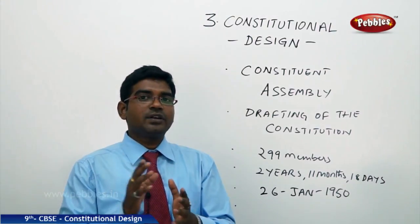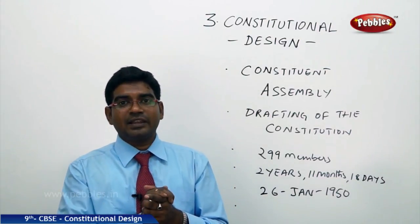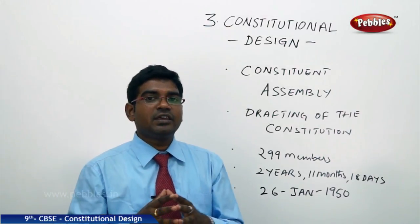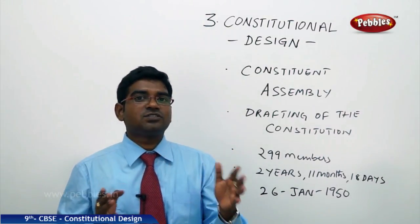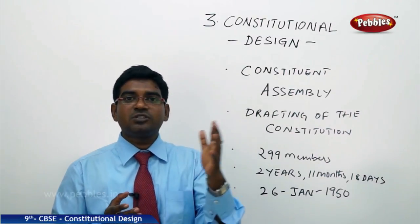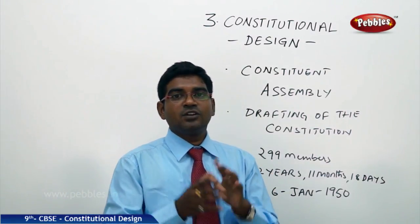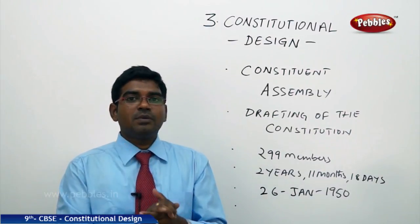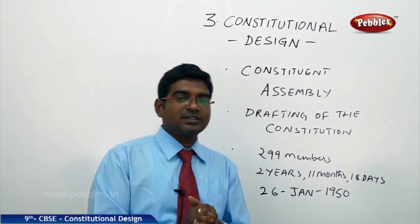An interim Constituent Assembly was elected with nearly 300 odd members. After the partition of India and Pakistan, the Muslim leaders went to Pakistan's Constituent Assembly, so only 299 members remained in the Indian Constituent Assembly.